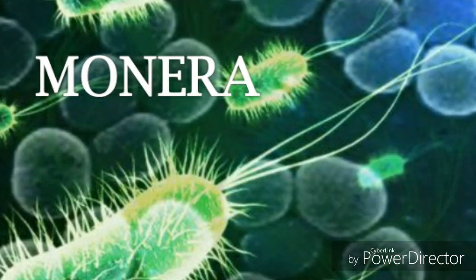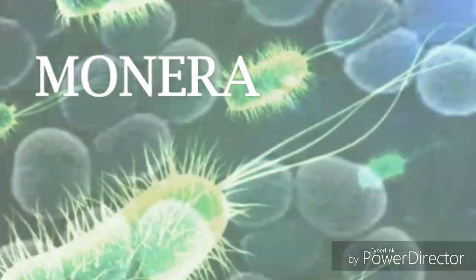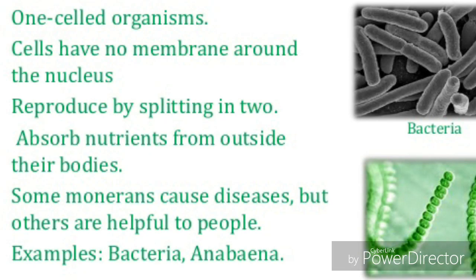In Whittaker's classification, the first kingdom is Monera. Monera represents primitive organisms; they are unicellular organisms. These cells do not contain a well-developed nucleus. They reproduce by splitting into two, that is binary fission. They absorb nutrients from outside their bodies. Some Monera are parasitic in nature and some are helpful. Examples are bacteria and Anabaena, which is a cyanobacterium.